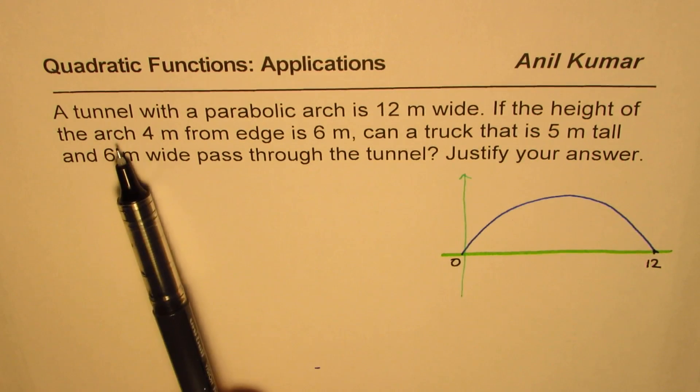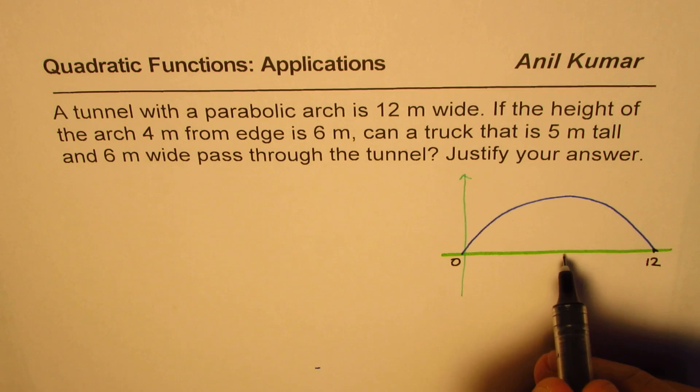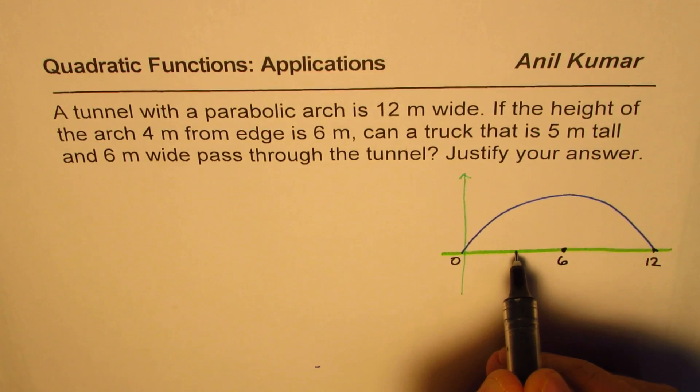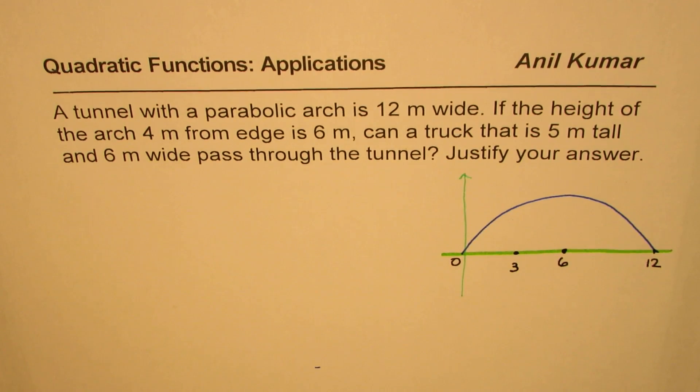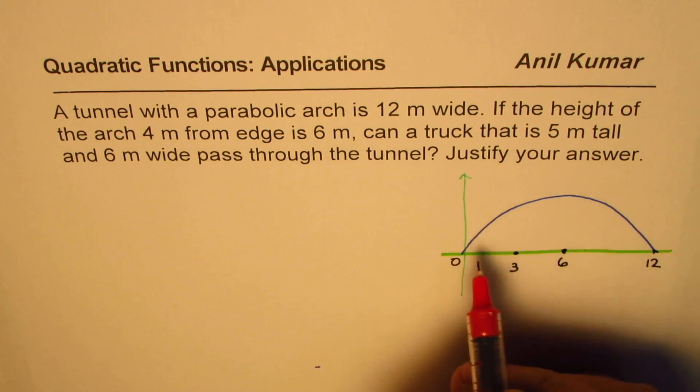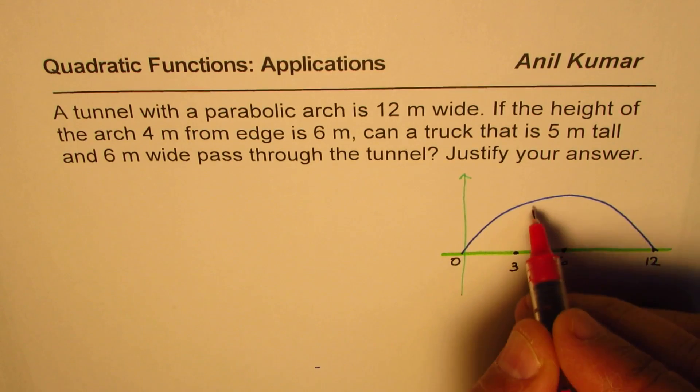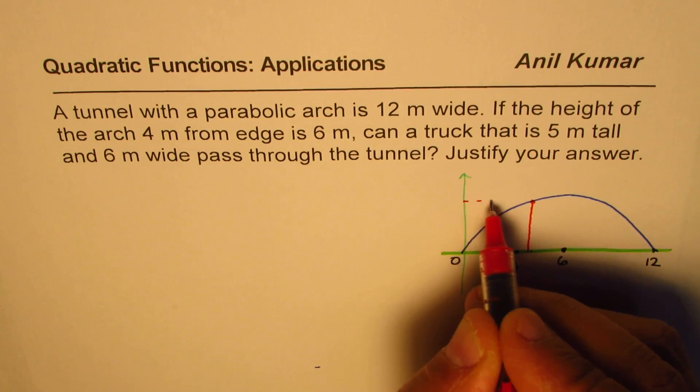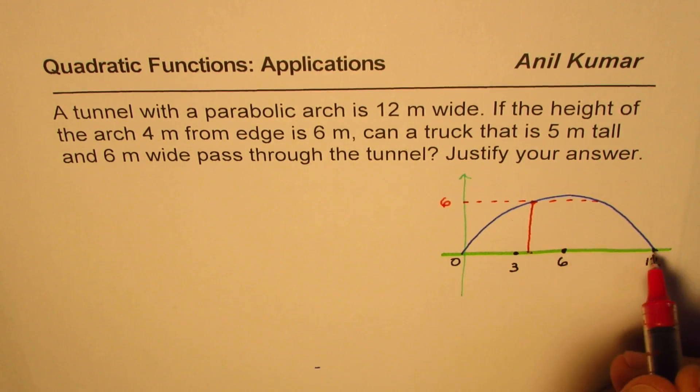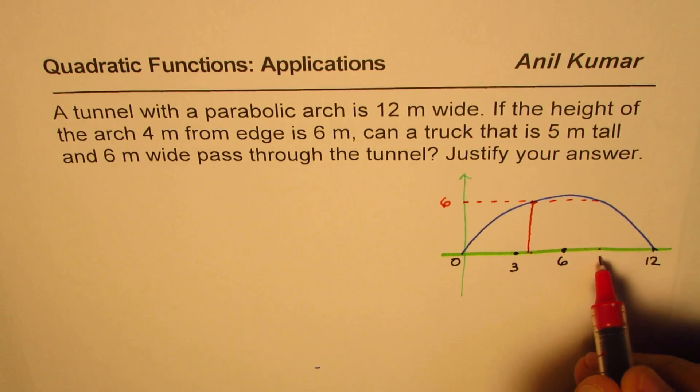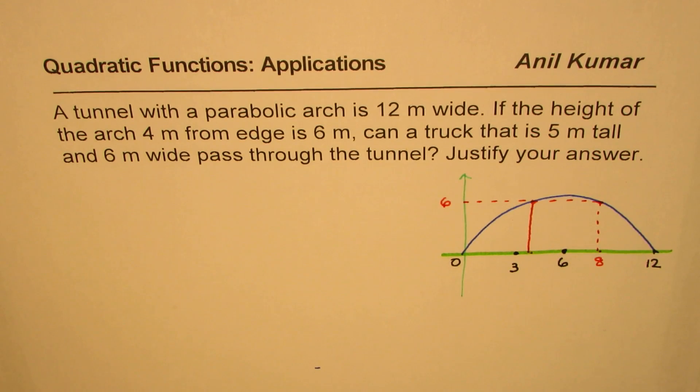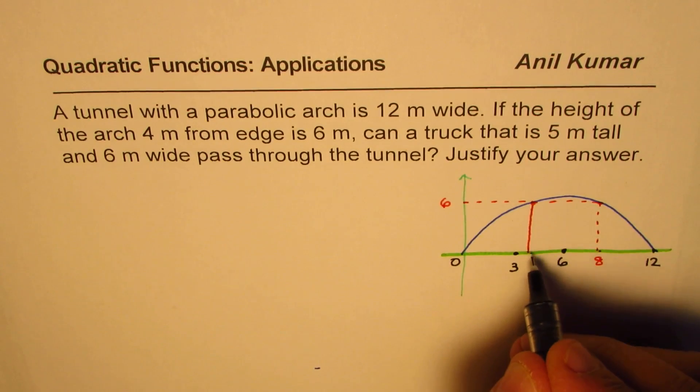If the height of the arc 4 meters from the edge is 6 meters, that means 4 meters from here is 6 meters. So this height is 6 meters. From symmetry, even from this side, 4 meters from here, which will be at 8, this is going to be 6 meters. You could take either of these points. So what we are given is that 4 meters away, the height of the arc is 6 meters. Now this particular point here and these two x-intercepts can help us find the quadratic equation to represent the parabolic arc.